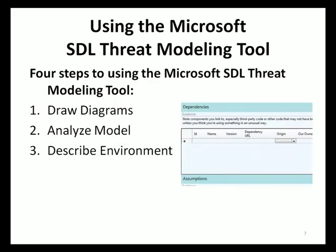The third step is the describe environment step. This step captures information regarding how the application being threat modeled will be deployed. The information gathered does not affect the threat model analysis results, but captures additional information that may be useful in the overall threat analysis, such as security dependencies that your application may have and assumptions made by your application.